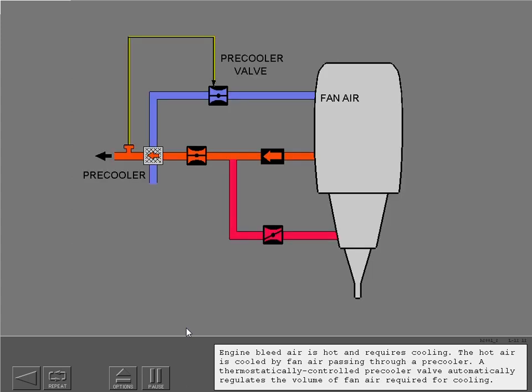Engine bleed air is hot and requires cooling. The hot air is cooled by fan air passing through a pre-cooler. A thermostatically controlled pre-cooler valve automatically regulates the volume of fan air required for cooling.